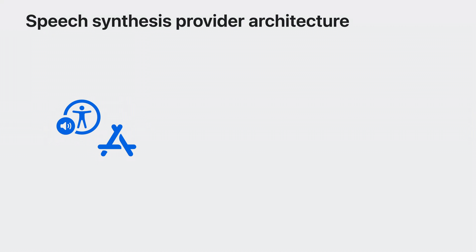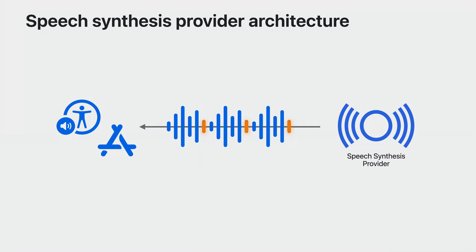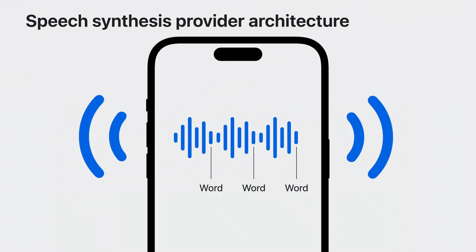Speech synthesis provider audio unit extensions will be embedded in a host app, and will receive speech requests in the form of SSML. The extension will be responsible for rendering audio for the SSML input, and optionally returning markers indicating where words occur within those audio buffers. The system will then manage all playback for that speech request. You don't need to handle any audio session management — it's managed internally by the Speech Synthesis Provider Framework.